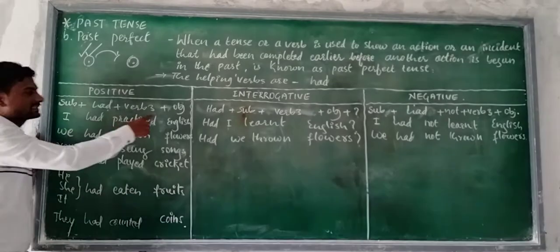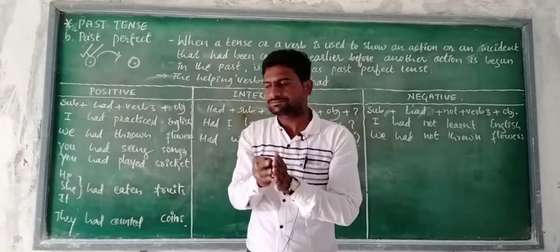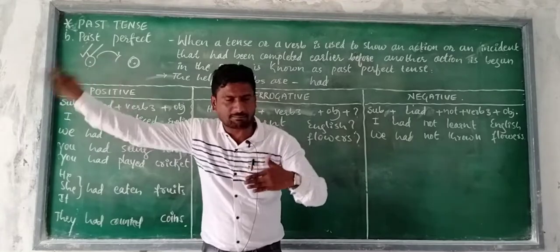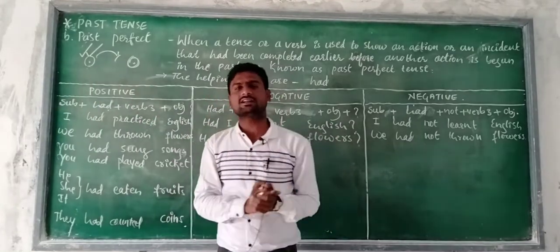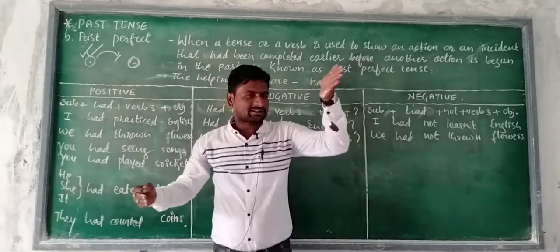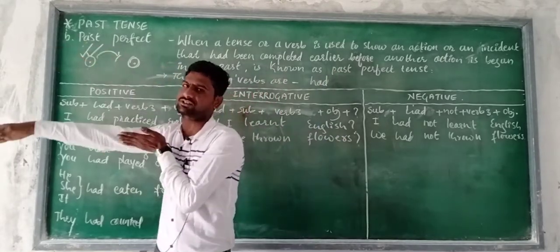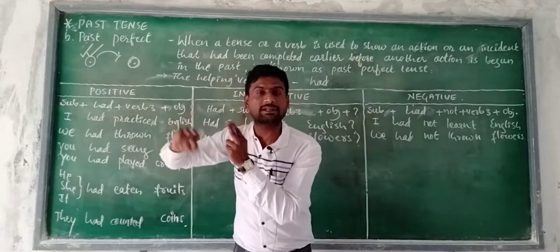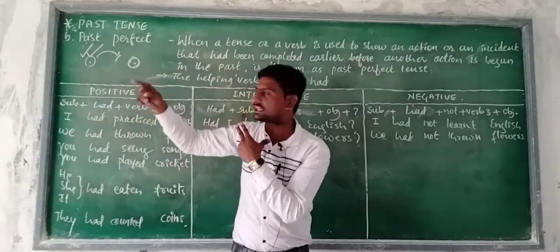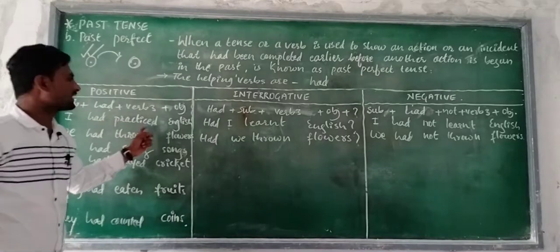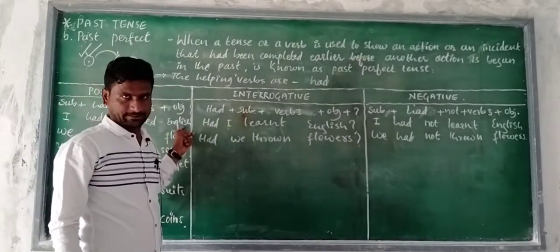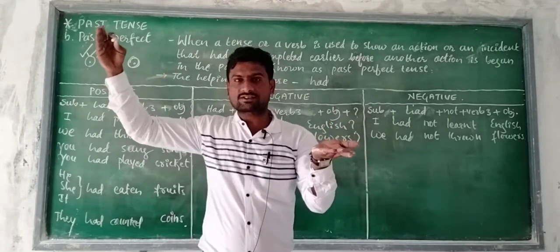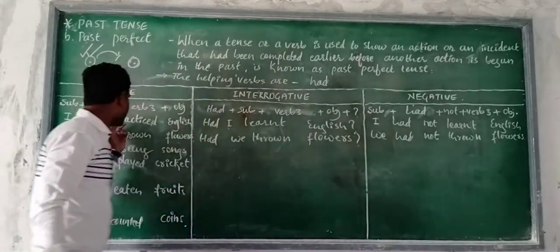For example: 'I had practiced English.' That means the practice of English is done and the practice of maths is also done in the past. Among these two actions, English practice was completed first — it happened earlier. So we say: 'I had practiced English, then I practiced maths.'